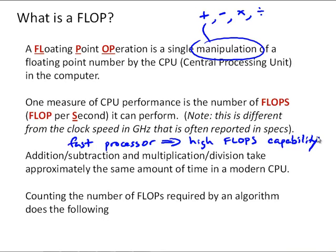So in modern computers, addition and subtraction and multiplication and division take approximately the same amount of time, and so we can just lump them all together as flops, and look at how many of these manipulations are needed in order to execute an algorithm. And counting the number of flops required by the algorithm can tell us the following.